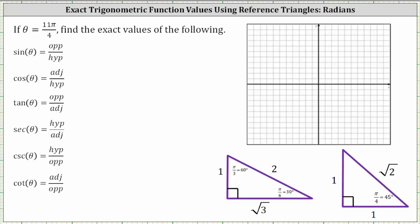In this lesson, we will use reference triangles to determine exact trig function values given theta is equal to 11 fourths pi radians. The first step is to sketch the angle in standard position to determine the reference triangle. The angle theta is 11 fourths pi radians, so we begin along the positive x-axis and then rotate counterclockwise 11 fourths pi radians.